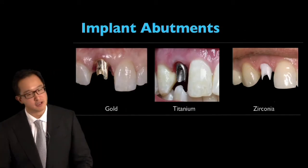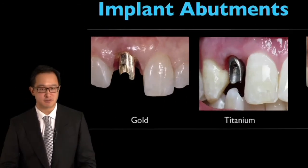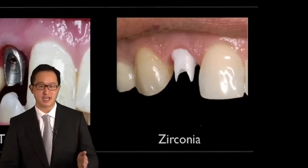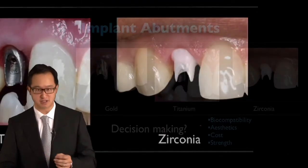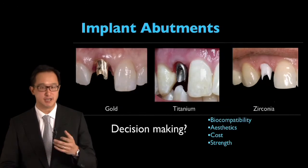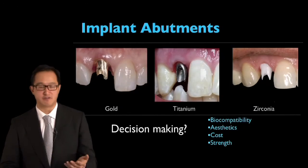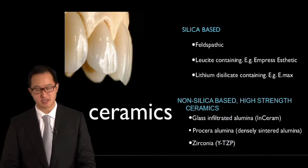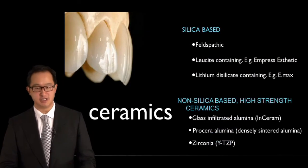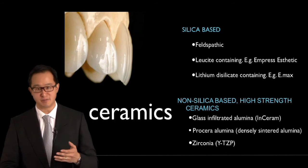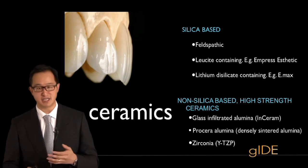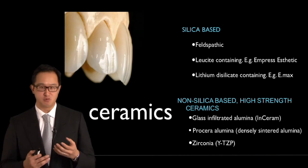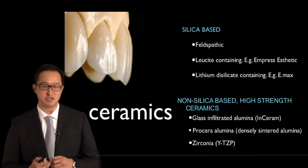We'll discuss different abutment materials from gold, titanium, and zirconia, and we'll work out how we make those decisions from a biocompatible aspect, from aesthetics, from strength. And we'll also talk about ceramics — the different materials that go on top of our implants and natural teeth, how we make those decisions, how we treat them, and which material is the one to use.